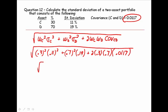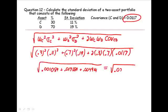This gives me, underneath the radical, 0.001089 plus 0.017689 plus 0.004914. Gives me the square root of 0.023692, which is 0.1539, which is equivalent to 15.39%.